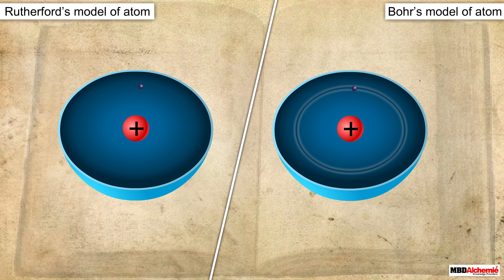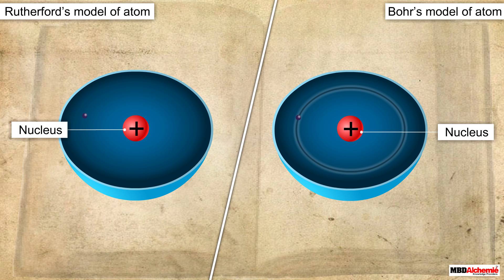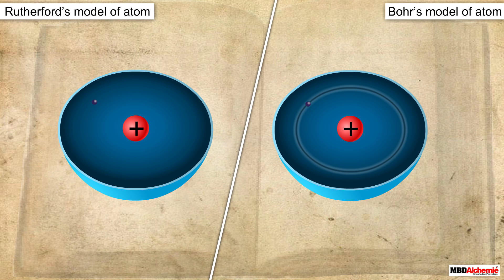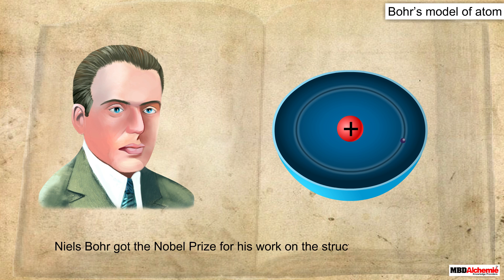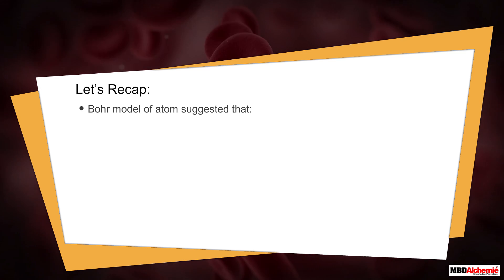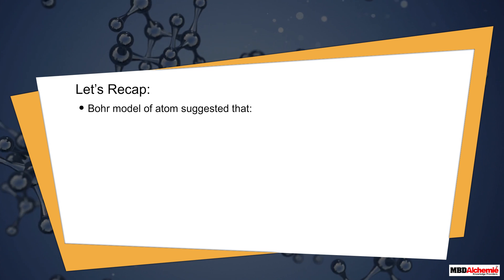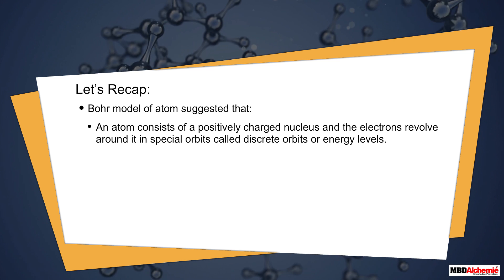The final model of Niels Bohr was similar to Rutherford's model in that an atom consists of a positively charged center around which electrons revolve. The only difference was that in the Bohr model, electrons revolve around the nucleus in fixed orbits with fixed energy. For his work on the structure of the atom, he received the Nobel Prize in 1922.